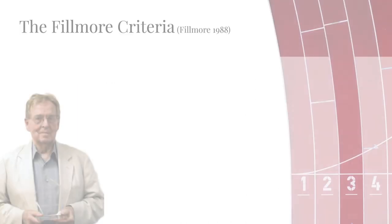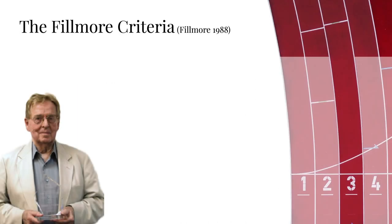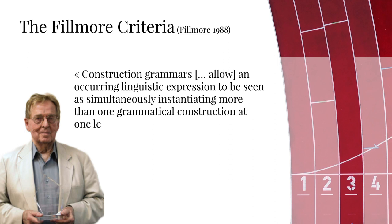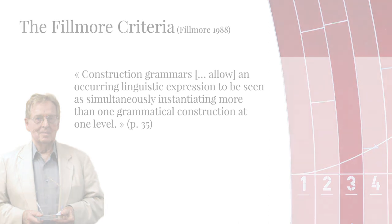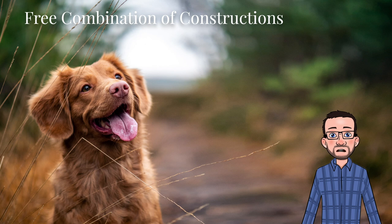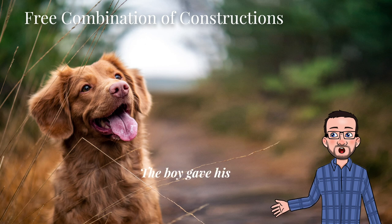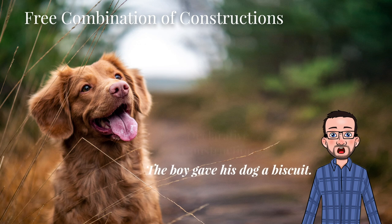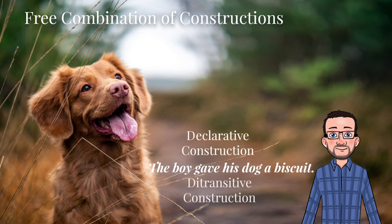Moving to the third criterion, and this one is a big game-changer. Construction grammars allow an occurring linguistic expression to be seen as simultaneously instantiating more than one grammatical construction at one level. This criterion means that constructions can overlap with each other, which I call the free combination of constructions. For example, if you have a sentence such as the boy gave his dog a biscuit, we can analyze the construct as being built by combining different constructions: the declarative construction, the ditransitive construction, and so on.